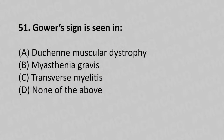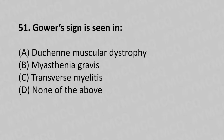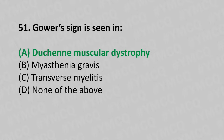Gower's sign is seen in: Option A, Duchenne's muscular dystrophy; Option B, Myasthenia gravis; Option C, Transverse myelitis; Option D, None of the above. And the answer is Option A, Duchenne's muscular dystrophy.